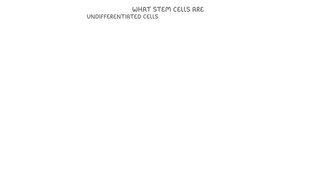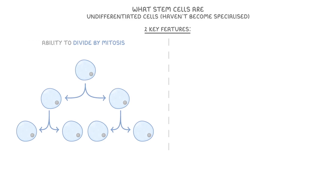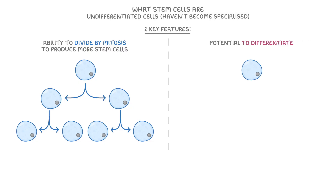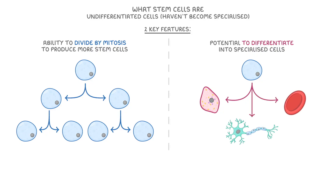Starting with what stem cells are, stem cells are essentially undifferentiated cells, and that means they haven't yet become specialised to perform specific functions. They have two key features: the ability to divide by mitosis in order to produce more stem cells, and the potential to differentiate into specialised cells, such as muscle cells, nerve cells, or blood cells.